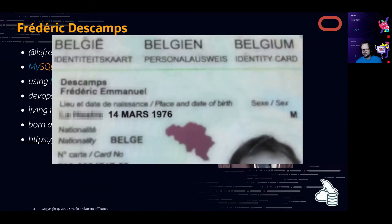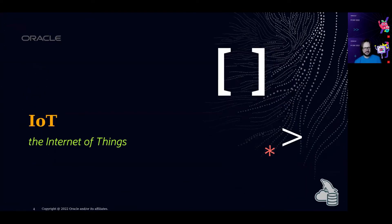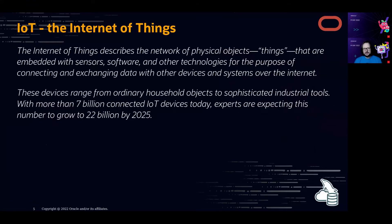I want to show you that I'm really born on Pi Day, so today is my birthday! Let's start with IoT — the Internet of Things. It describes a network of all physical objects, like a small Raspberry Pi, things that are embedded with sensors and software that gather a lot of data. It generates a lot, a lot of data, and that's what we're going to play with today.